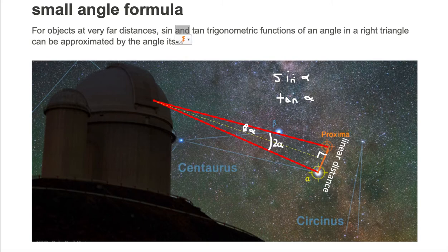The definition for small angle formula says for objects at very far distances, sine and tan trigonometric functions of an angle in a right triangle can be approximated by the angle itself. So we can approximate sine alpha and tangent alpha by the angle itself of alpha.